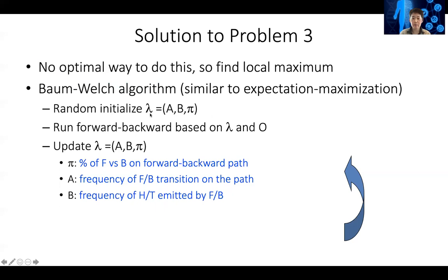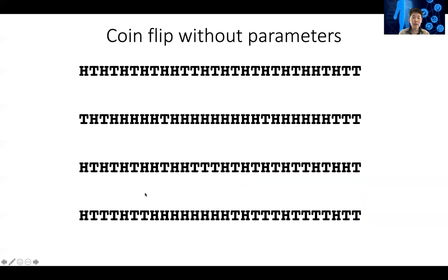Initially we randomly initialize some parameters and based on the initialized parameters, we can run the forward-backward algorithm to estimate the path, and then we can update the parameters based on the path you estimated. So let's look at this situation.